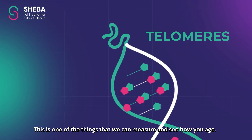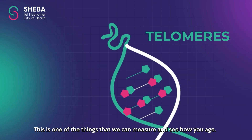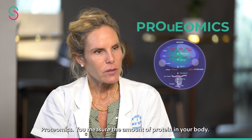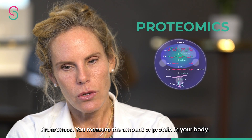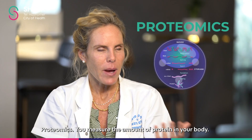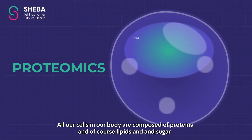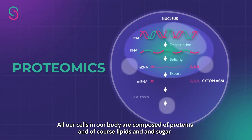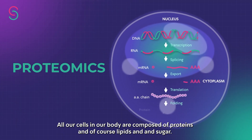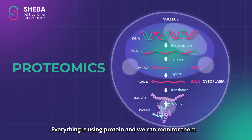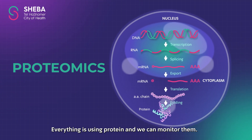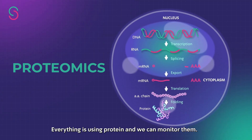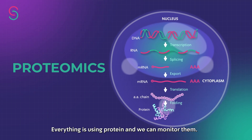This is one of the things that we can measure and see how you age. With proteomics, you measure the amount of protein in your body. All our cells in our body are composed of proteins, and everything is using protein. And we can monitor them.